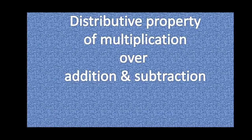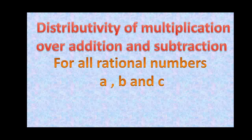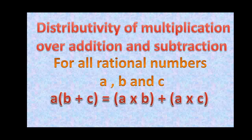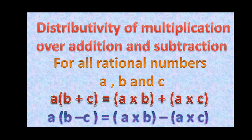Hello everyone, today we are going to learn the distributive property of multiplication over addition and subtraction. For all rational numbers a, b and c: a into (b plus c) is equal to a into b plus a into c. For subtraction: a into (b minus c) is equal to a into b minus a into c.